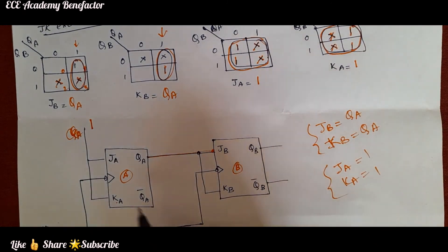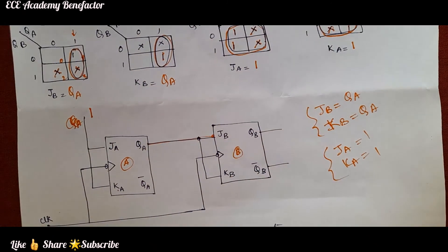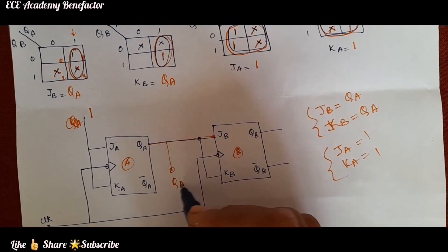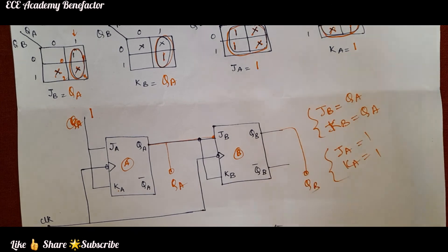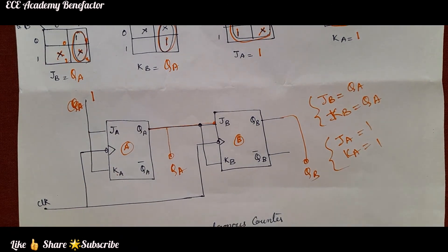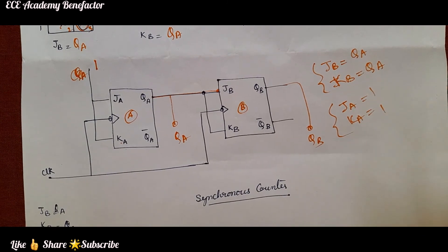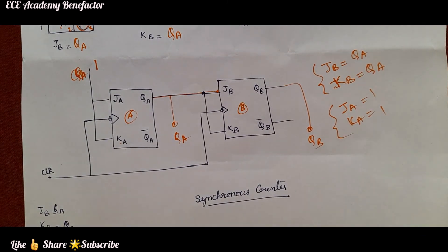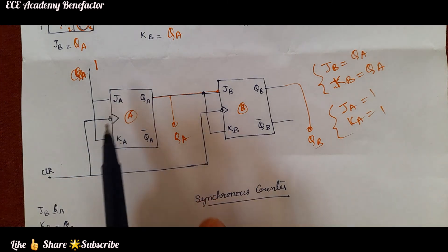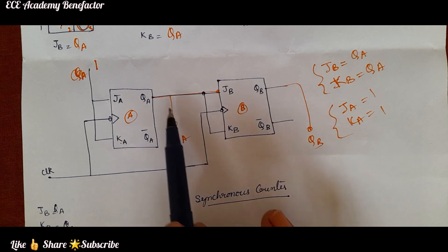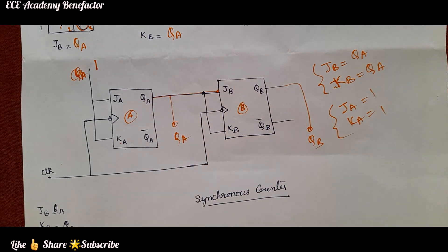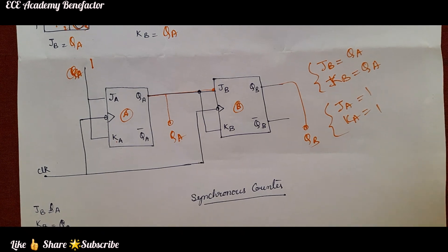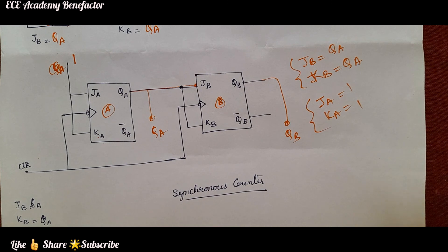After connecting the inputs, we draw the outputs — we will get output QA and QB. I hope you have understood the design of the synchronous counter counting the states 0, 1, 2, 3 and again 0, 1, 2, 3. Synchronous means we are giving the same clock, and JA, KA are connected to 1, JB, KB are connected to QA. If you have any queries, you can post in the comment section. Thank you. Good luck students.